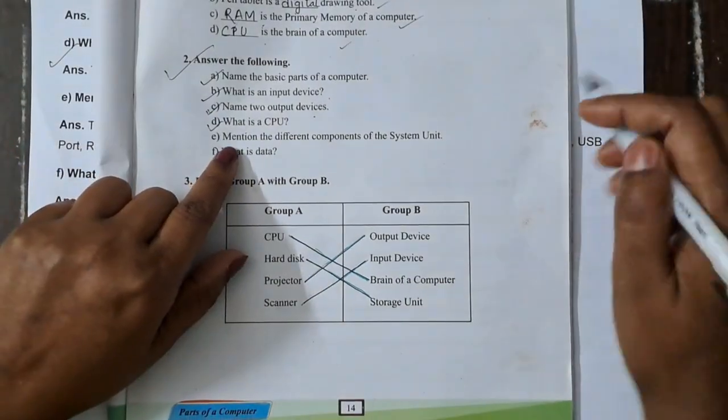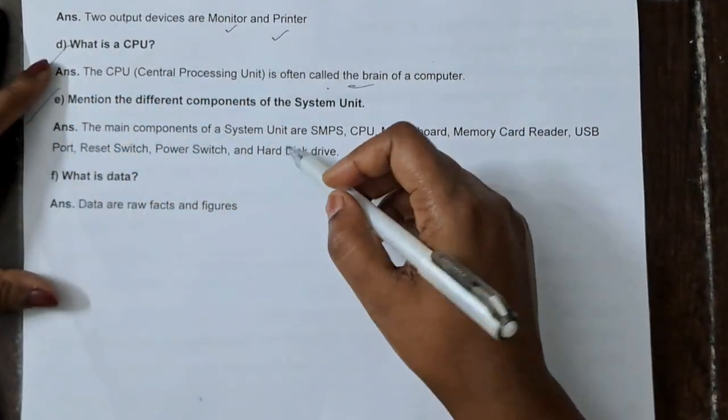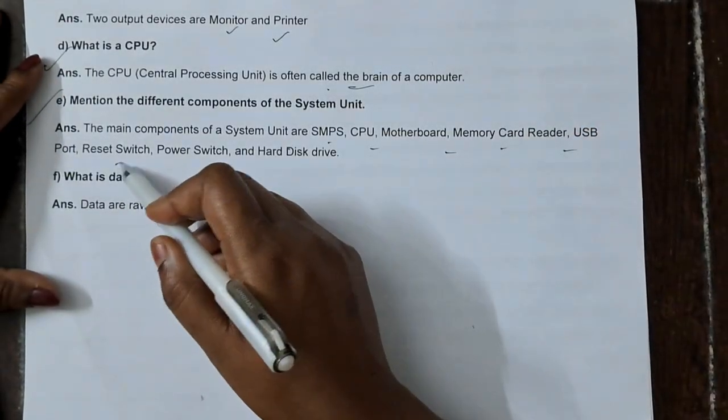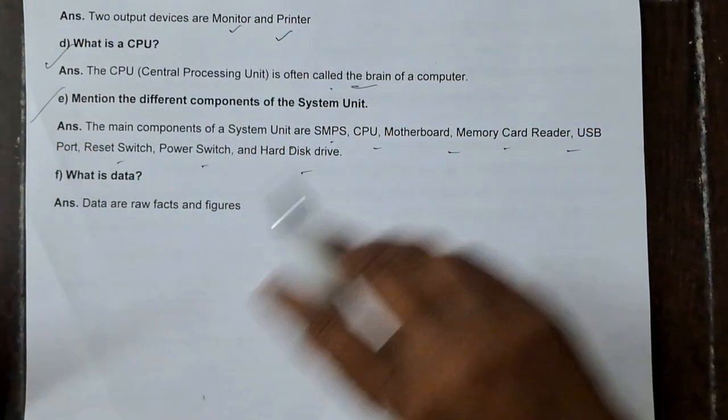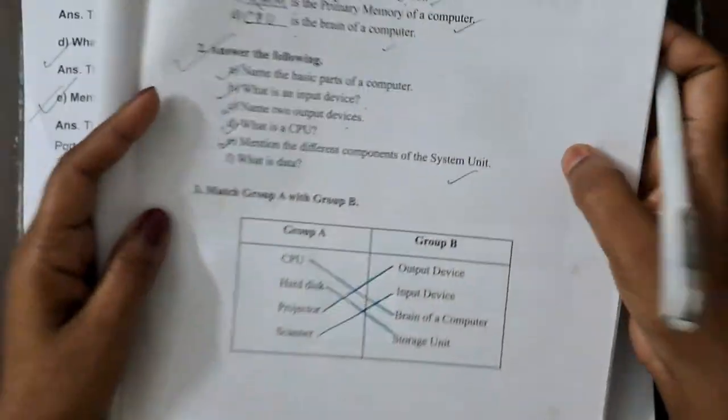Next, mention different components of the system unit. Main components of the system unit are SMPS, CPU, motherboard, memory card reader, USB port, reset switch, power switch and hard disk drive. These are parts of the system unit.